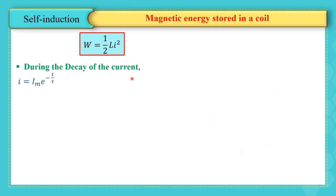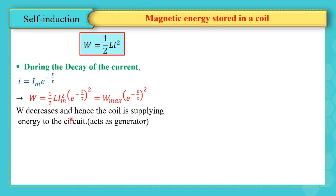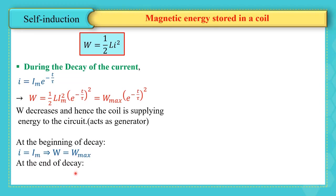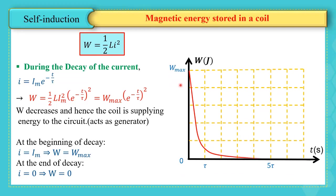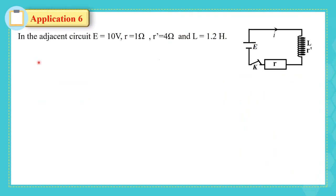During the decay of the current, i = i_max × e^(−t/τ), so W = ½Li_max² × e^(−2t/τ) = W_max × e^(−2t/τ). W decreases, so the coil is supplying energy to the circuit and acts as a generator. At the beginning of decay, the current was i_max and energy was maximum. At the end, current is zero and energy decreases to zero after five time constants, as shown in the figure.